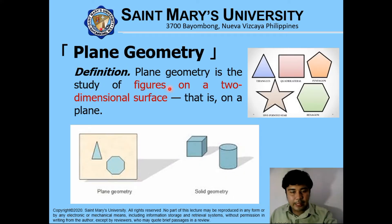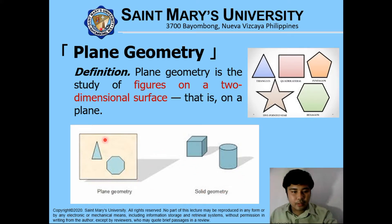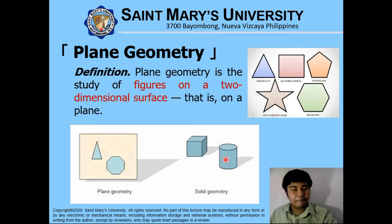Plane geometry is defined as the study of figures on a two-dimensional surface, that is, on a plane. The world around us is obviously three-dimensional, having width, depth, and height. Solid geometry deals with objects in three-dimensional space, which includes cubes, cylinders, spheres, etc. Plane geometry deals with objects on a flat surface, which includes triangles, hexagons, quadrilaterals, pentagons, five-pointed stars, etc., that can be drawn on a flat piece of paper.